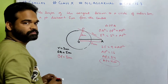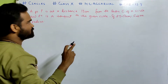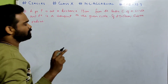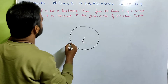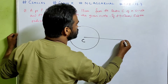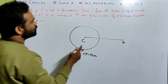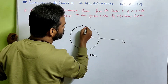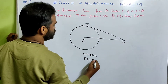Now let us look at number 2. A point P is at a distance of 13 cm from the center C of a circle, and PT is the tangent to the given circle. If PT equals 12 cm, find the radius. We first draw the diagram. This is the center C, point P with CP = 13 cm. We draw the tangent PT with length 12 cm.